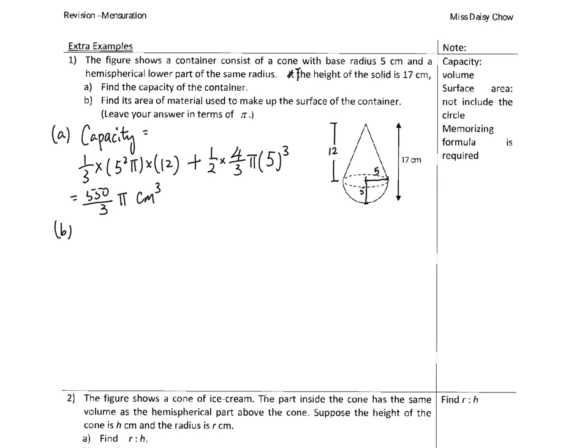For Part B, the question asks you to find the materials used, which means the surface area. The curved surface area of a cone is π r l. To find l, I use the Pythagorean theorem: l² = 5² + 12².